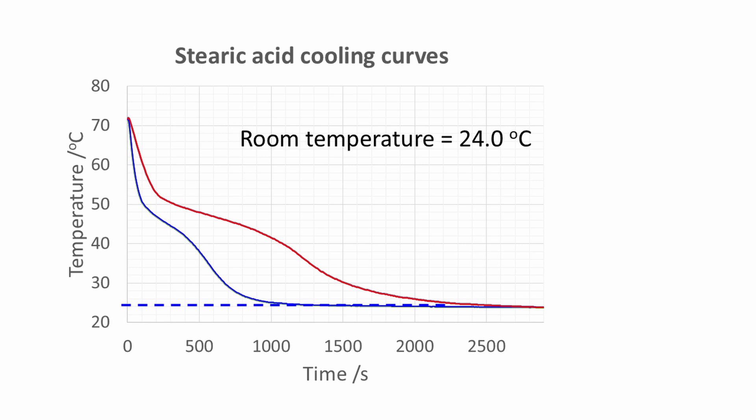It took 1000 seconds for the sample cooled in water to reach room temperature, whereas it took about 2500 seconds for the sample cooled in air to reach room temperature. Again, this shows that the rate of cooling for the sample cooled in water was much faster because water is a better conductor of thermal energy.